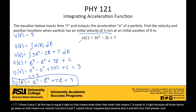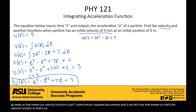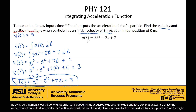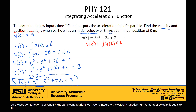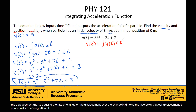That's the velocity function. We also have to find the position function. The position function uses the same concept — we have to integrate the velocity function. Remember, velocity is equal to the rate of change of displacement over the change in time. So the inverse of that: our displacement is now equal to the integration of our velocity function.